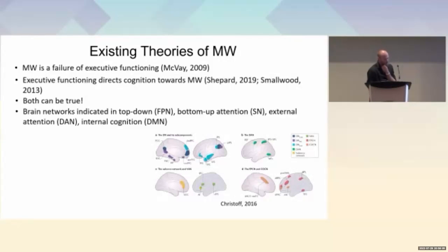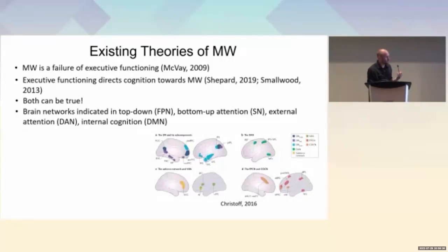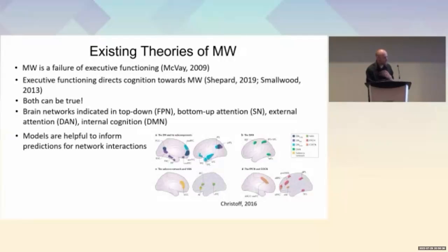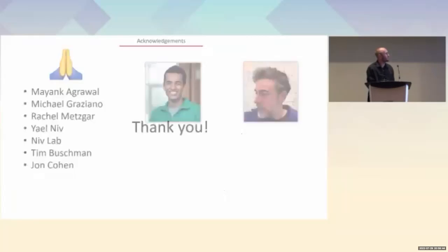Future directions include investigating how these networks interact — specifically whether the salience network mediates a switch between goals and determines which goal is valuable, while the frontal-parietal network enacts control depending on what the salience network determines to be a valuable goal. These models are helpful for understanding the underlying interactions between neural systems. Thank you to my collaborators and for listening.